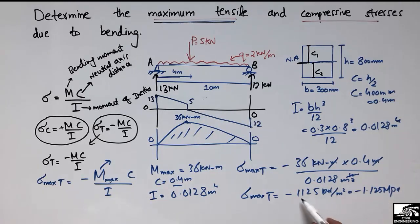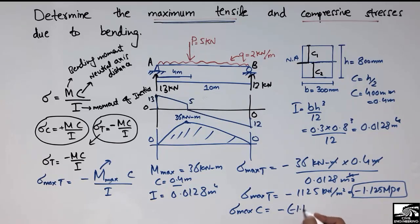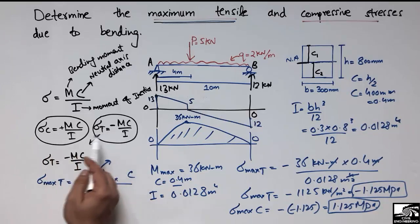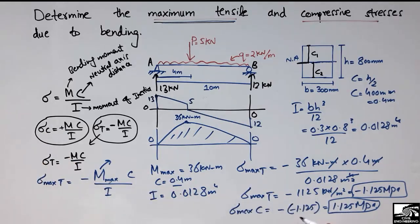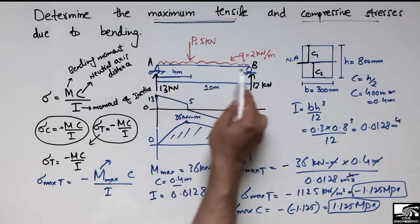Converting units: 1.125 kN/m² becomes 1.125 MN/m², or equivalently negative 1.125 MPa for the tensile stress (dividing by 1000). So the maximum tensile stress is 1.125 MPa. The maximum compressive stress is simply the negative of this value, giving positive 1.125 MPa. The compressive and tensile stresses differ only in sign.